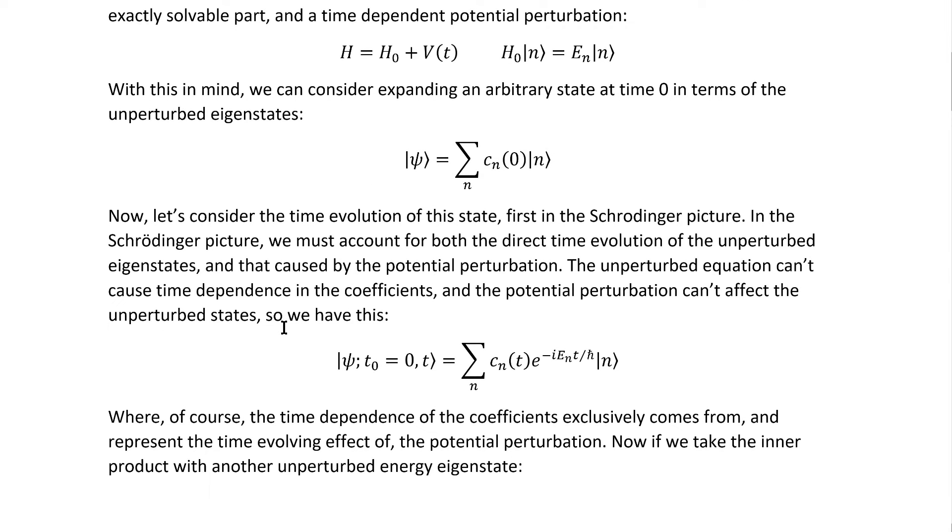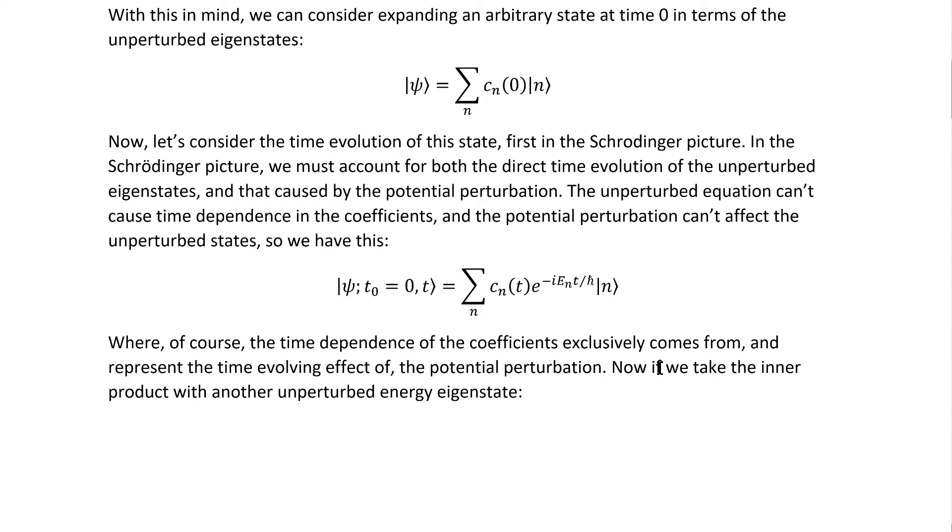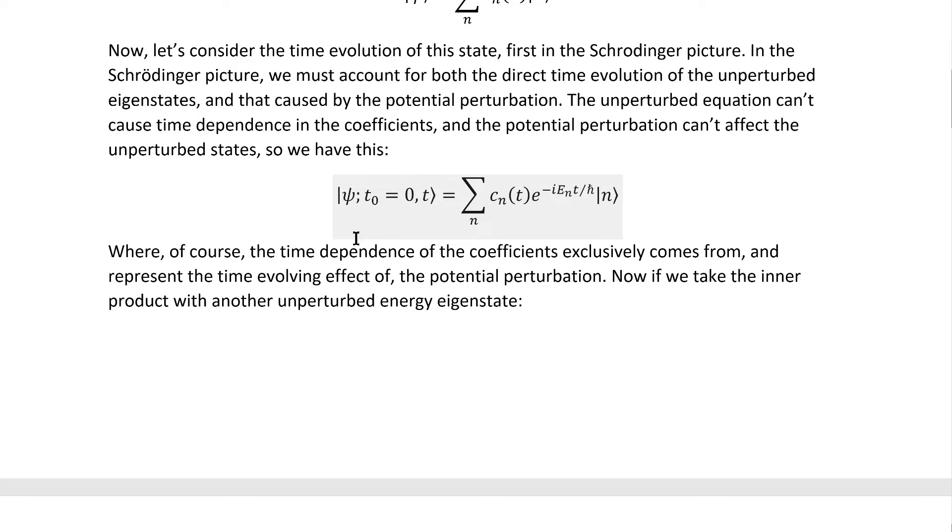Now let's consider the time evolution of this state, first in the Schrödinger picture. In the Schrödinger picture, we must account for both the direct time evolution of these unperturbed eigenstates and that caused by the potential perturbation. The unperturbed equation can't cause time dependence in the coefficients, naturally, and the potential perturbation obviously can't affect the unperturbed states, because they're specifically defined as that potential perturbation not being there. All that gets us to this.